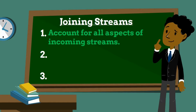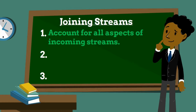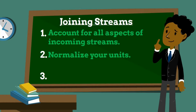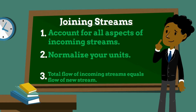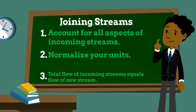When solving problems like this, it's important you do three things. First, you must account for all aspects of incoming streams — specifically the concentrations and the flow rates. Second, you must normalize your units so you'll be able to add and subtract them more easily. And last, remember that the total flow of the incoming streams equals the flow of the new stream.